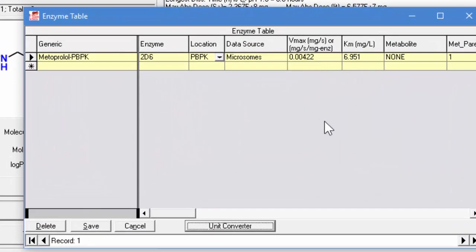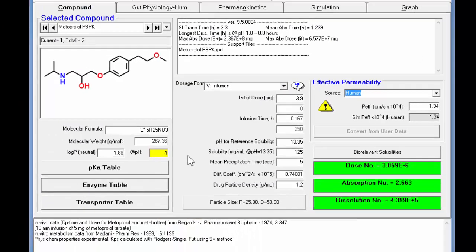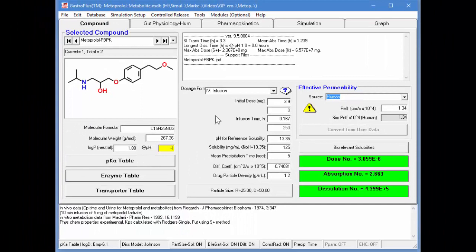Now you'll see that these two values are entered. The other thing we need to do is map these to the metabolites record. That's simply by pulling down on this menu and specifying the metabolites record. Then we save this in the enzyme table, and we have this set up to be metabolized by 2D6.